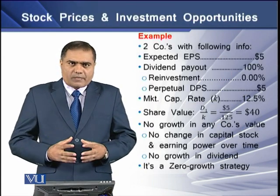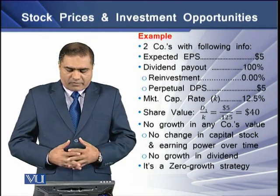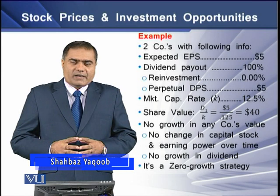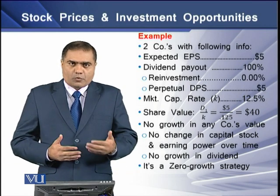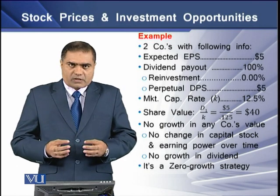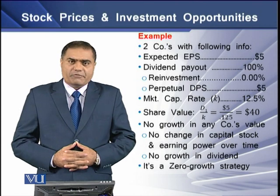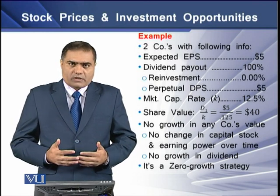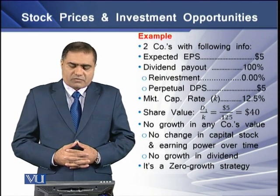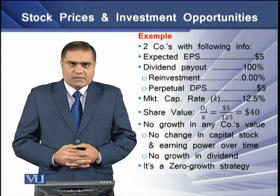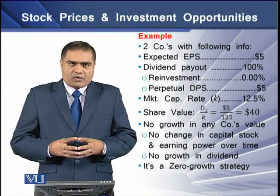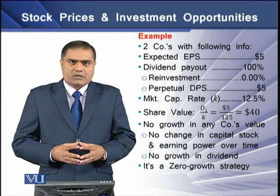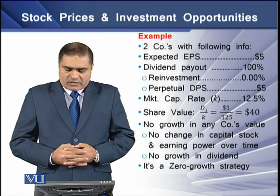We have two companies in our example where expected earnings per share is $5. Dividend payout is 100%, meaning there is no retention or plowback — so b equals 0. With 100% payout, reinvestment is 0%, the perpetual dividend per share is $5, and the market capitalization rate is 12.5%. The share price equals D1 over K, with no G, giving a resulting value of $40.